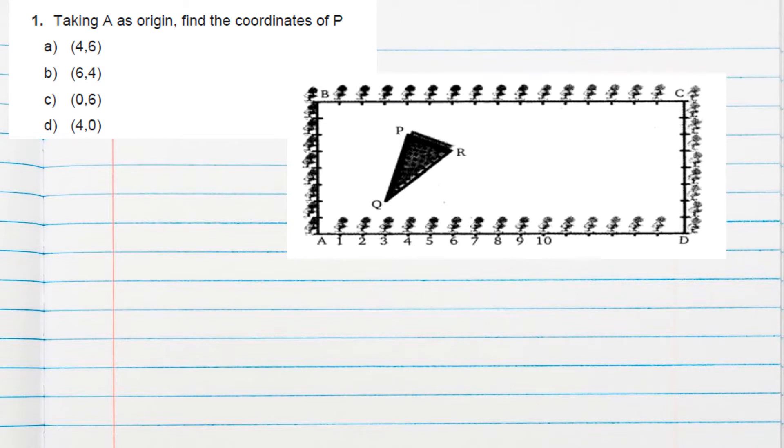First question is: taking A as origin, find the coordinates of P. So if A is the origin, this we can treat as x-axis, this can be treated as y-axis. Okay, and coordinate of P is asked.